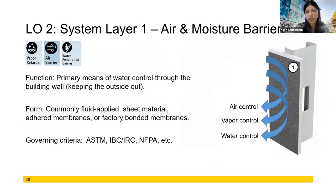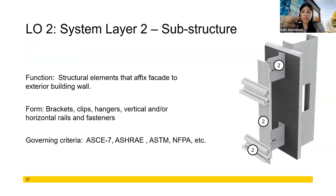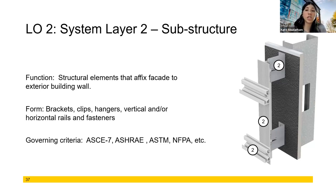System layer one doesn't change — we have our air and moisture barrier, but the terms we're using here are not 'barrier' so much as 'control.' We want to allow condensate to permeate, control air movement, and control bulk water movement. Our goal is for everything to wind up in our drainage plane. Then we have our sub-construction, which serves multiple purposes: one is to fix the cladding, one is to create the gap for our insulation, and one is to create the additional space for your rain screen cavity.